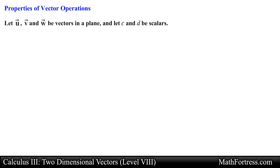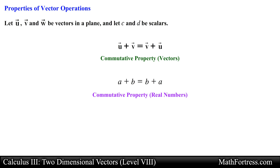Let u, v and w be vectors in a plane and let c and d be scalars. Then we can express the following properties as follows. Vector u plus vector v equals vector v plus vector u. In other words, vector addition is commutative. This is known as the commutative property of vector addition, similar to the commutative property of addition for real numbers from algebra. The only difference is that we are now dealing with vectors as opposed to real numbers.